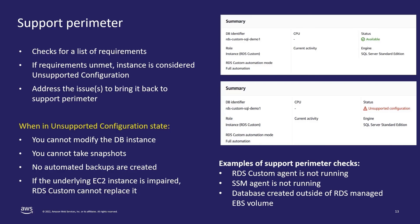If you identify the issue using the error log and warnings in your RDS console and fix the problem, when the next check runs it will verify that requirements are now met and place your instance back to the available state. Remember, when the instance is in unsupported configuration state, you cannot make any modifications, you cannot take a manual snapshot, no automated snapshots can occur, and if the underlying EC2 instance is impaired, RDS Custom automation will not be able to replace that instance.